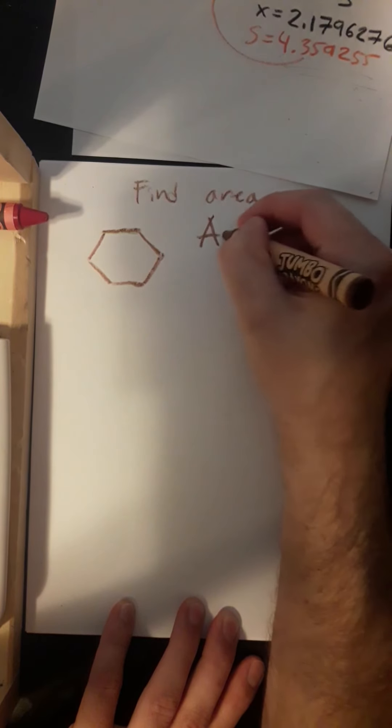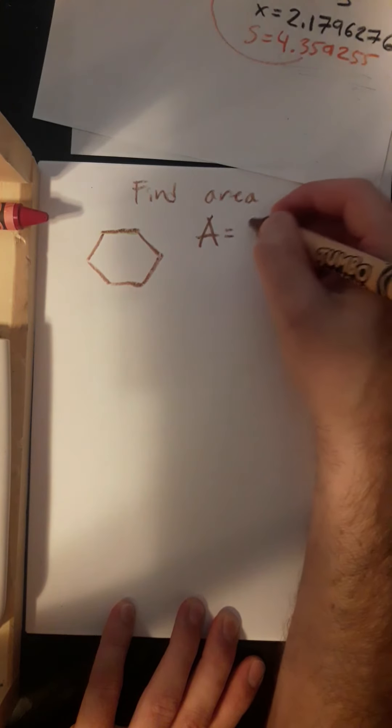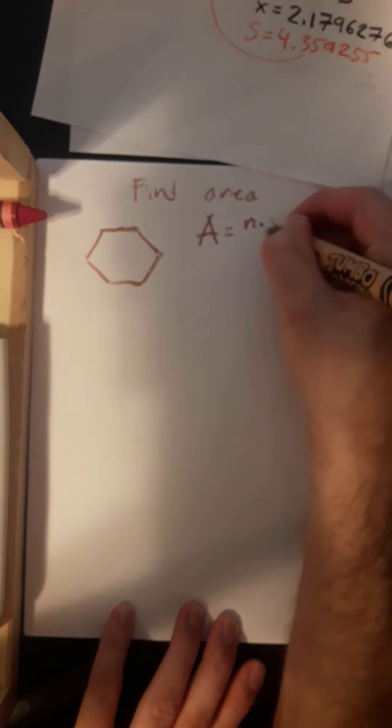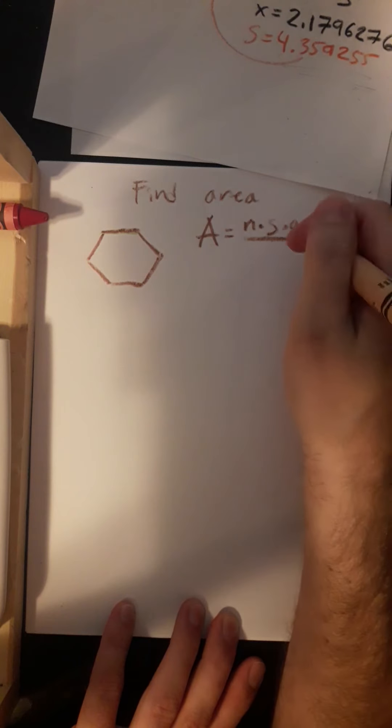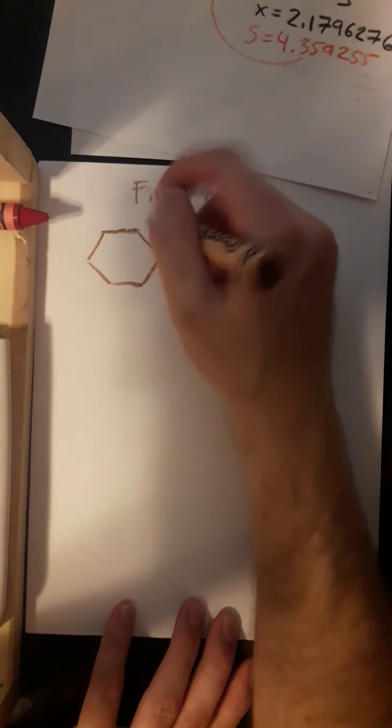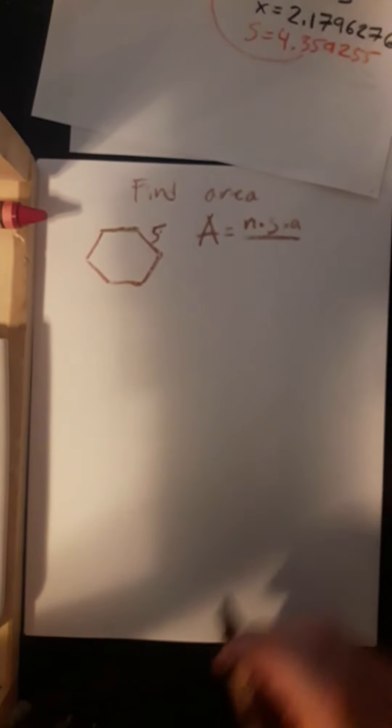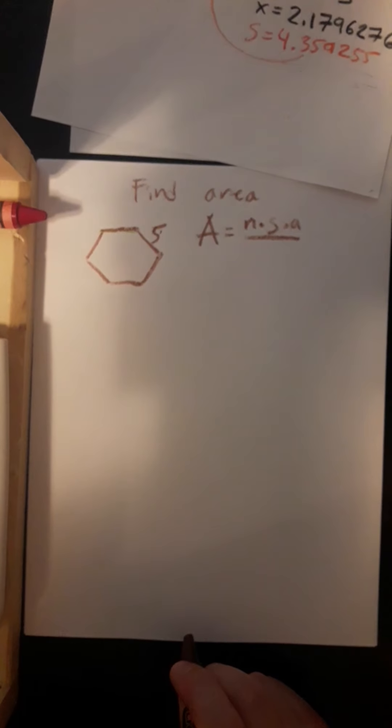Now, we know area should be equal to the number of sides times the side length times the apothem. And let's say all they gave you was a side length was 5. Okay, how are we going to find the area of this shape?